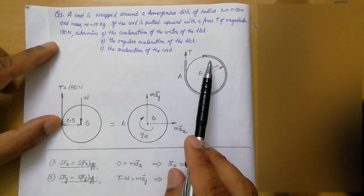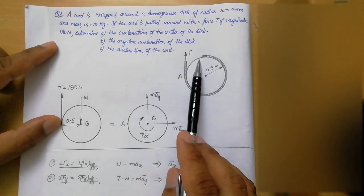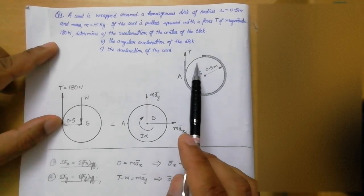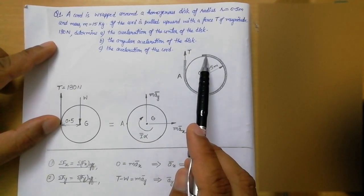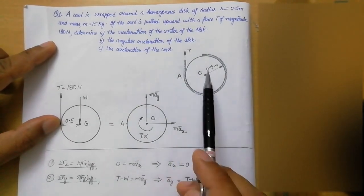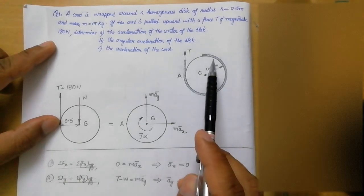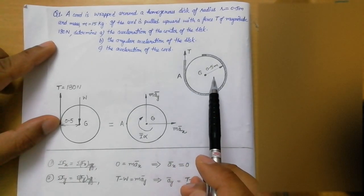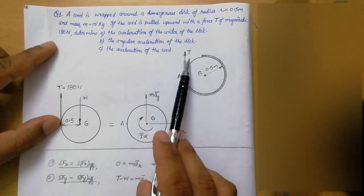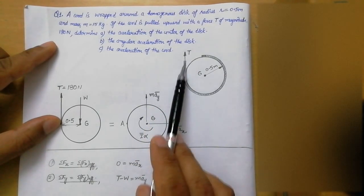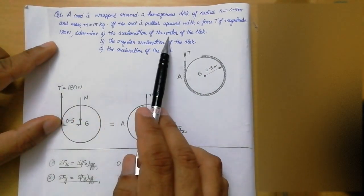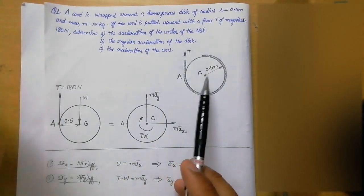This diagram is given to us. We have a homogeneous disc — this circle represents the homogeneous disc — and around this disc there is one cord attached at a particular point and wrapped around the disc. The radius of the disc is 0.5 and the mass is 15 kilogram. If we pull this cord upward with a force T whose magnitude is 180 newton, what will be the acceleration of the center of the disc?